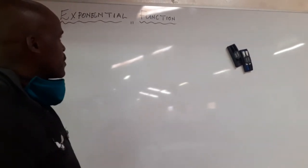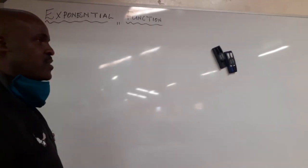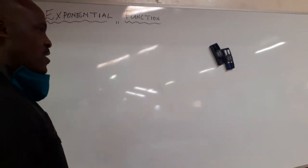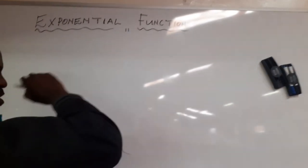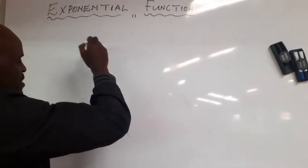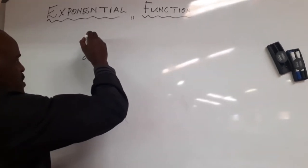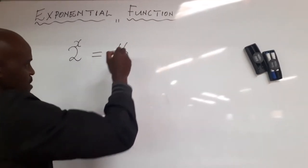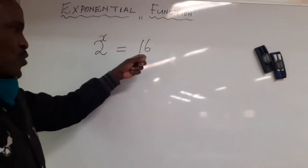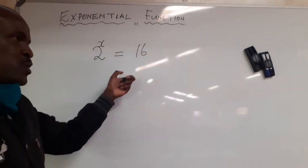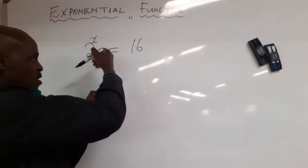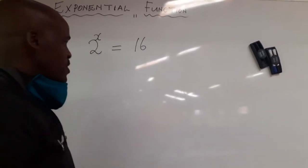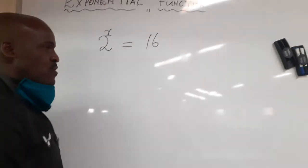Let's look at what we call the exponential equation. For example, 2 exponent x is equal to 16. This is an exponential equation because what we have to solve is an exponent. Therefore we call this an exponential equation. In order to solve for x, we make the bases to be the same.